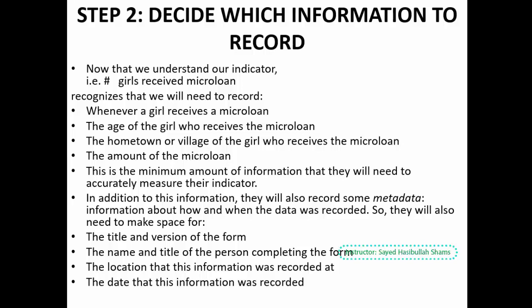Here we have a good example — the same previous example: number of girls who received microloans. For this indicator we use some questions and write them in our form. For example, one of the really important things to record is age, amount of the microloan, hometown, and any other information such as mobile phone number and signature. It is very important that we decide which information to be recorded.